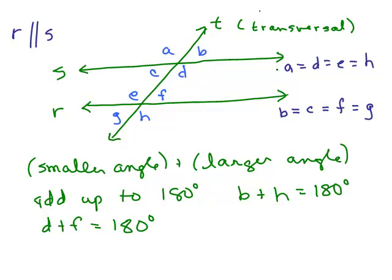Okay? So these are the larger angles, A, D, E, and H. These are the smaller angles and any one of these added to any one of these is 180. They're supplementary angles.